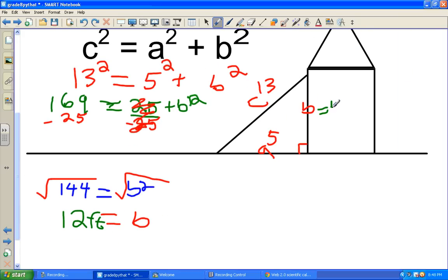We know that B now equals 12 feet. So the man is 12 feet high when he's at the top of the ladder.